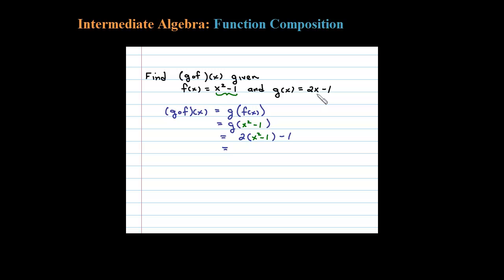From here it's just a matter of simplifying. 2X squared minus 2, and then minus the 1 gives me the composition here: 2X squared minus 3.